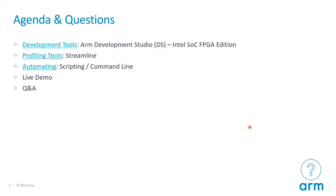The session is broken up into a couple of different sections. I'll give an overview of ARM Development Studio itself and the features the Intel SOC FPGA edition has. Development Studio also includes other tools including the ARM compiler and Streamline, which is one of our performance analysis tools. I also have a section on automating, because you might want to integrate this with continuous integration or regression tests.